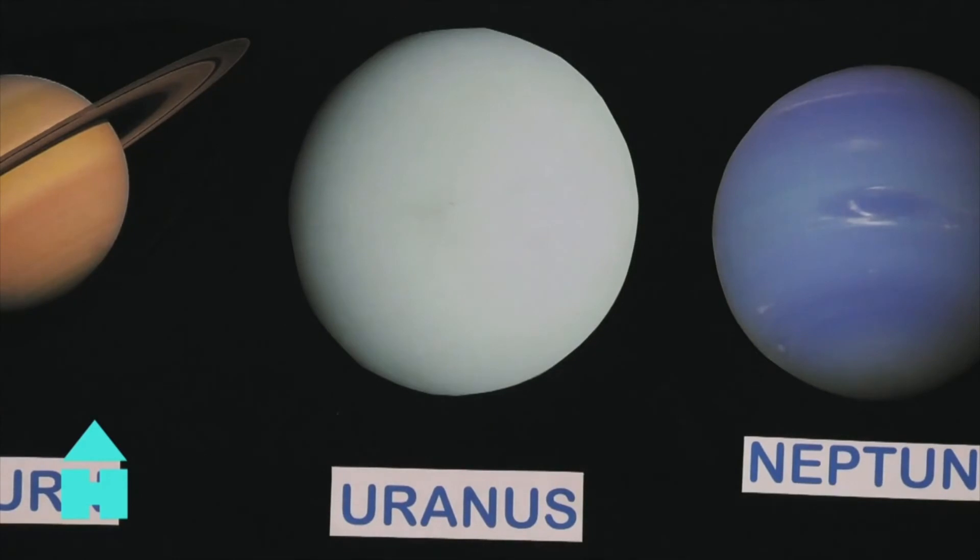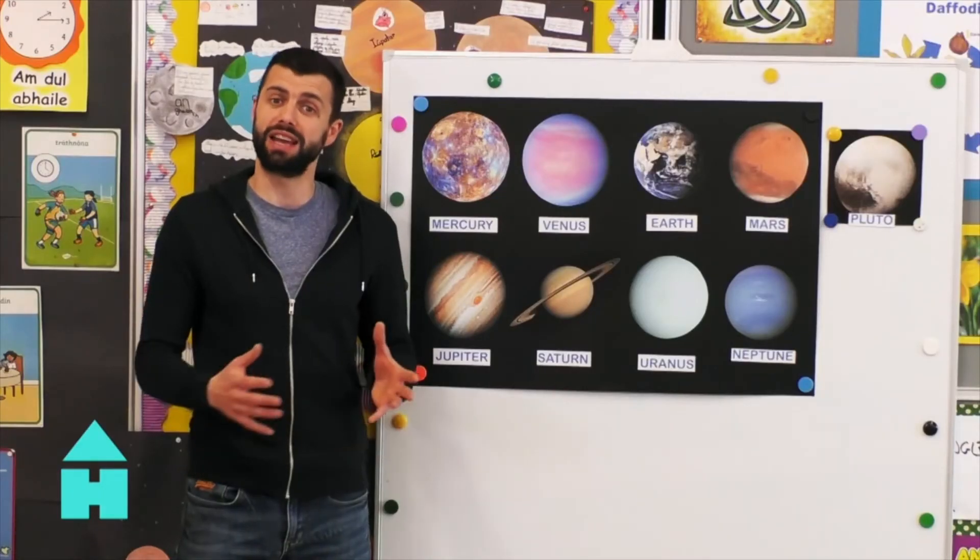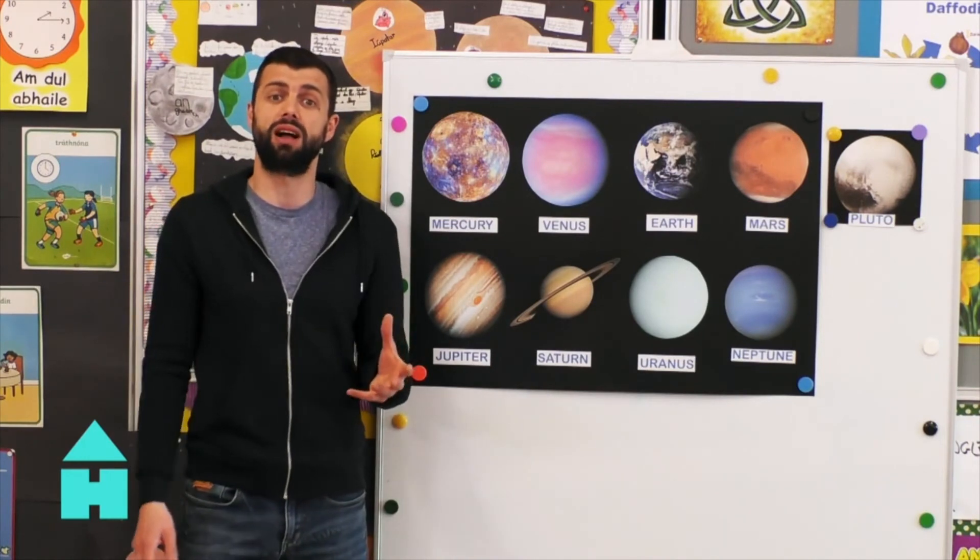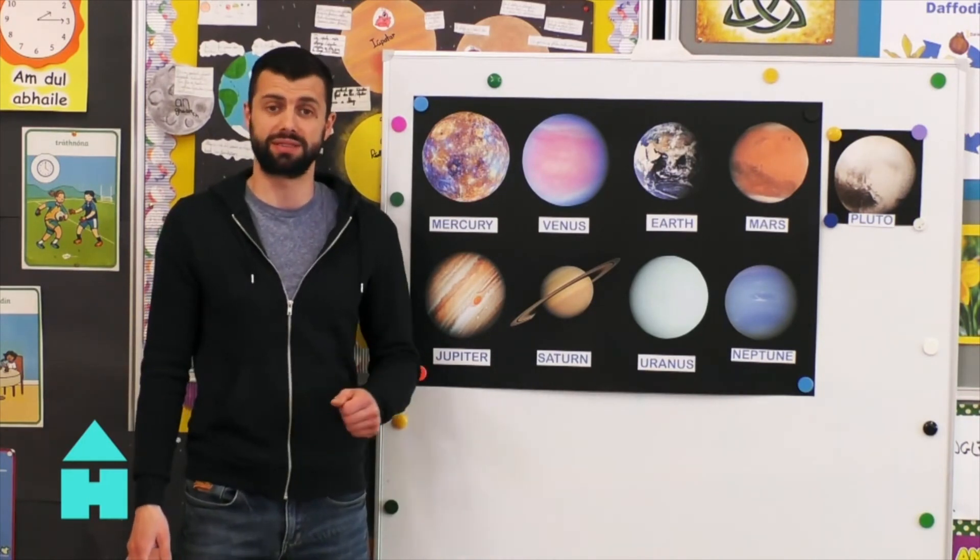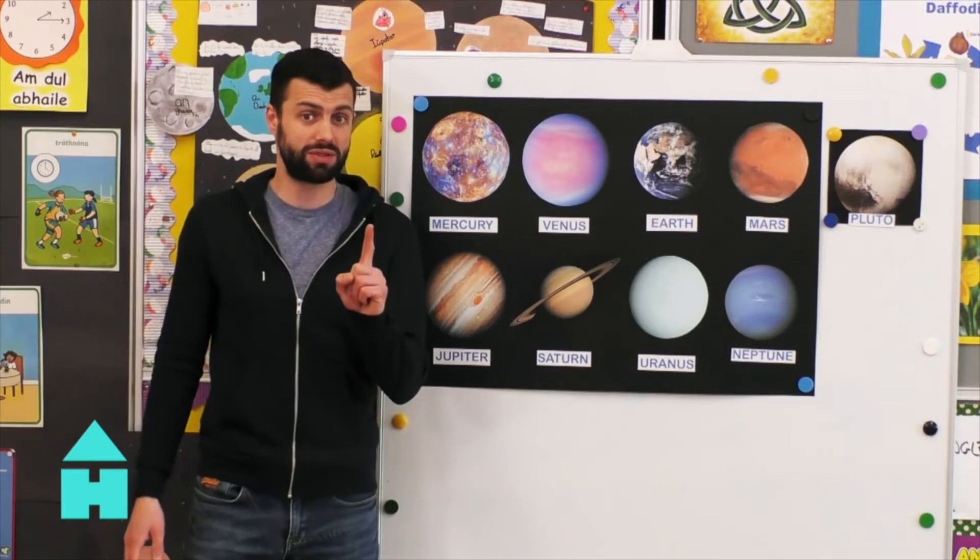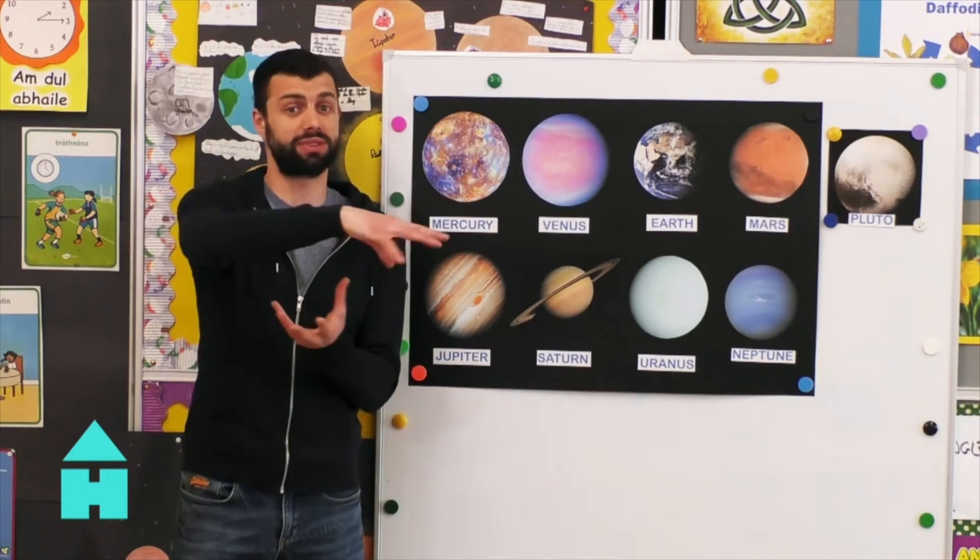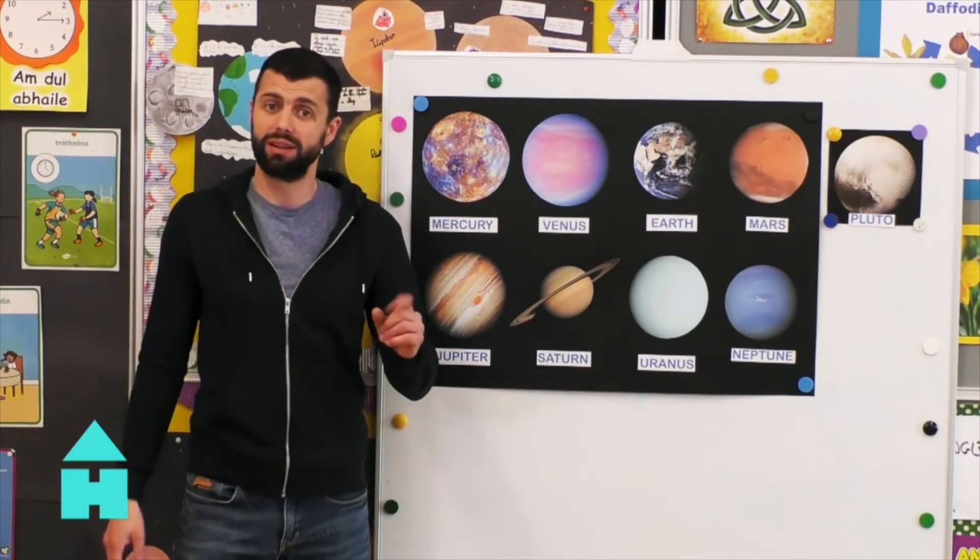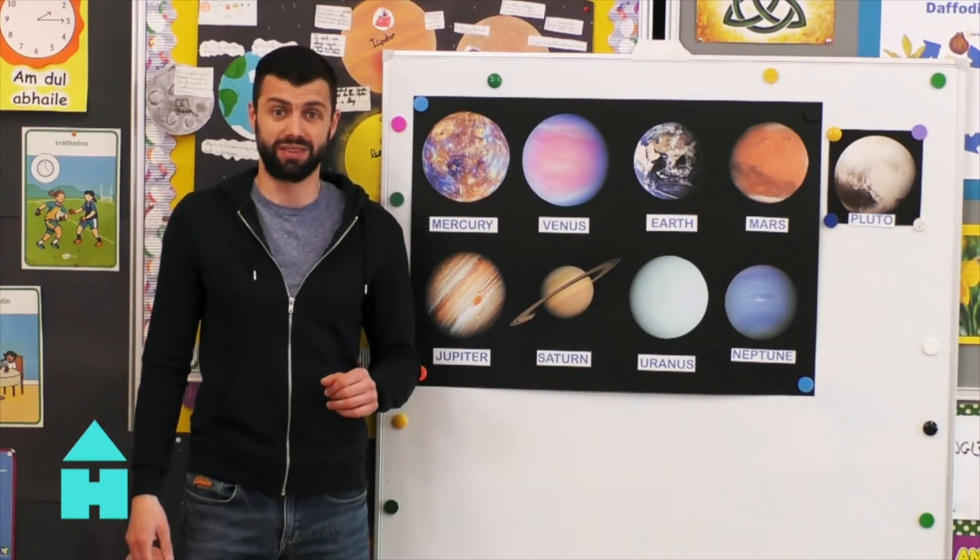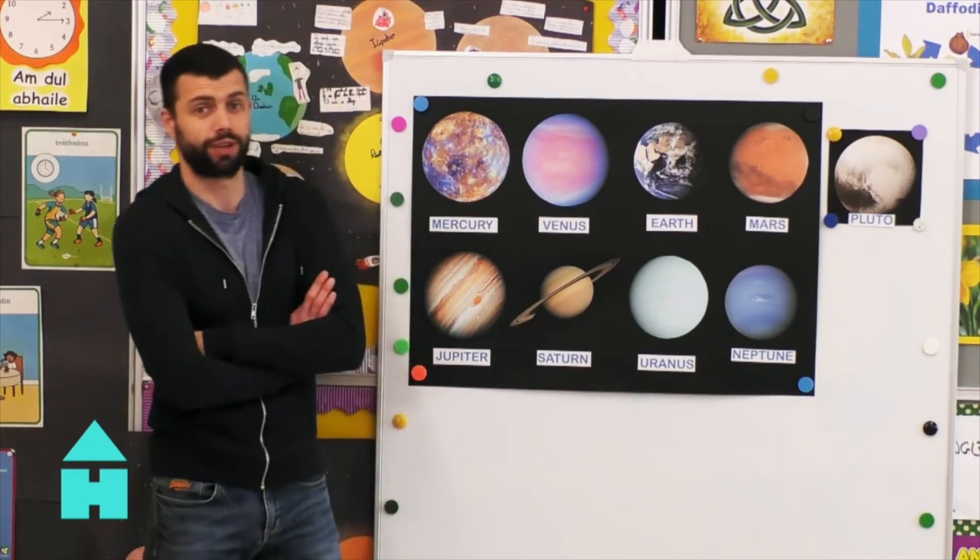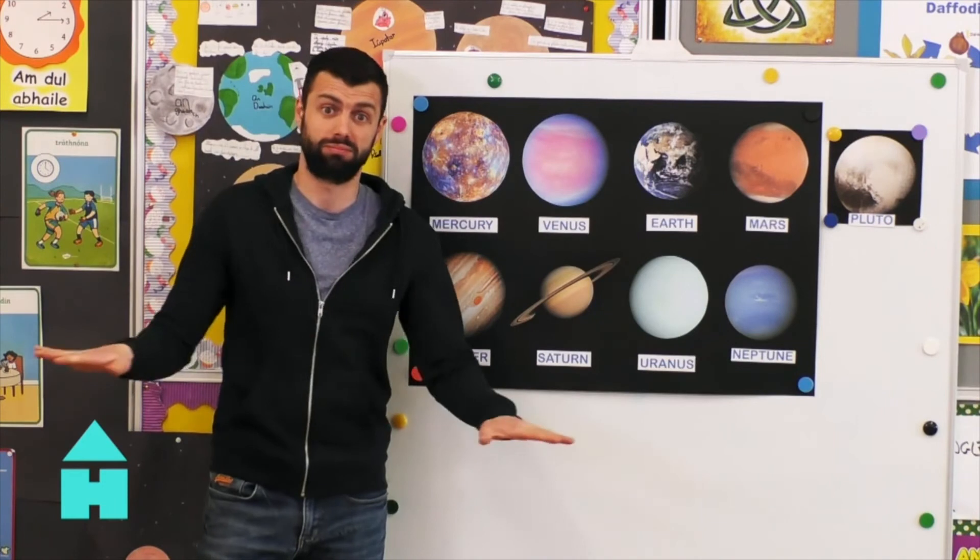Uranus is the only planet in our whole solar system to be named after an ancient Greek god. With the exception of Earth, the other planets are all named after Roman gods and goddesses. One day on Uranus is about 17 hours long. Uranus takes a long time to orbit the sun. One year equals 84 Earth years. Holiday rating? Coldest holiday ever. Would not recommend.